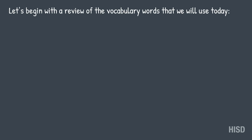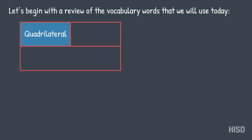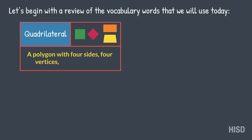Let's begin with a review of the vocabulary words that we will use today. Quadrilateral: a polygon with four sides, four vertices, and four angles.